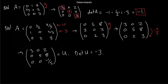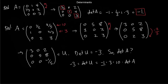The determinant of U is minus 3. The determinant-changing operations were: a row swap giving minus 1, multiplying a row by 3, and multiplying another row by 10. Solving for the determinant of A: det(A) equals 1/10. That's enough — that computes the determinant for you.